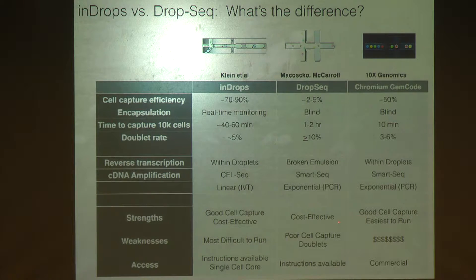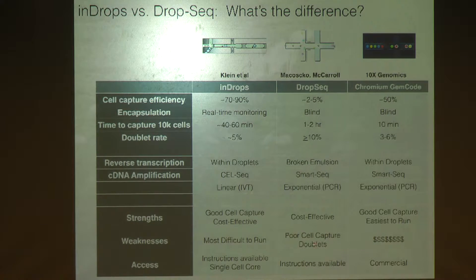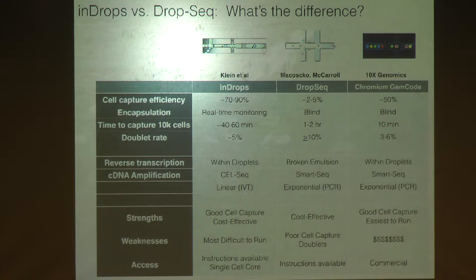This is my subjective assessment of the strengths and weaknesses of each method. inDrops really shines at cell capture and is cost-effective, similar to Drop-Seq — both are much more affordable than the commercial alternative most people use now. 10x Genomics, however, is probably the easiest to run; from what I've heard it takes about 10 minutes and is very streamlined. The weakness for 10x is obviously cost. The weakness for inDrops is probably the difficulty of actually doing the run. Our way to address this is to create a core facility where we have experts trained on the device, so you bring your sample in and take advantage of all that experience to get high-quality results.